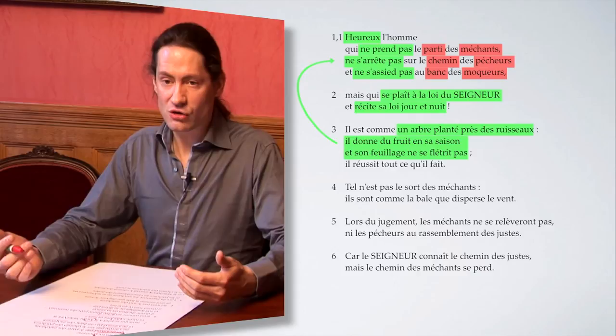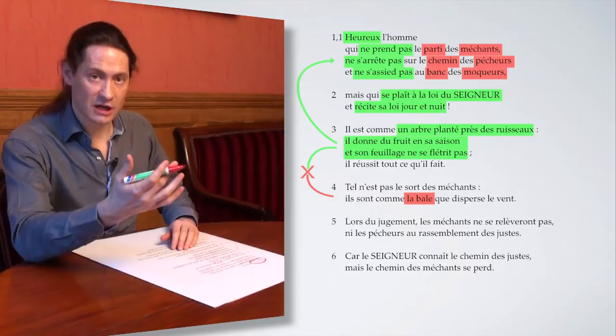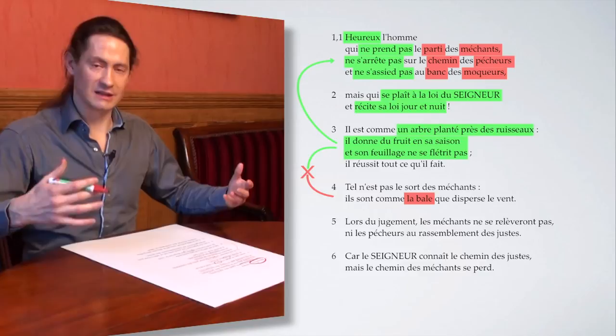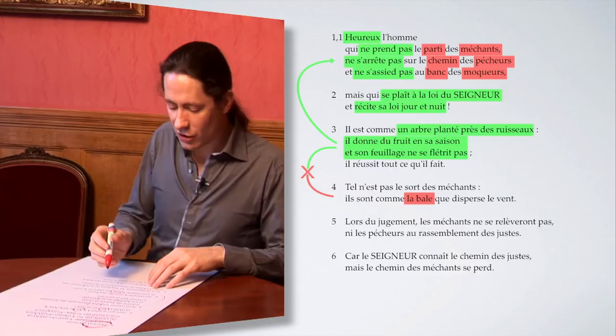Celui-ci tranche avec la balle mentionnée au verset 4 et qui est en opposition avec l'arbre. La balle est légère, sèche, inutile. Tout le contraire de l'arbre solidement raciné, irrigué et fructueux. La balle est emportée par le vent lorsqu'on jette bien haut le blé afin de n'en conserver que le grain.